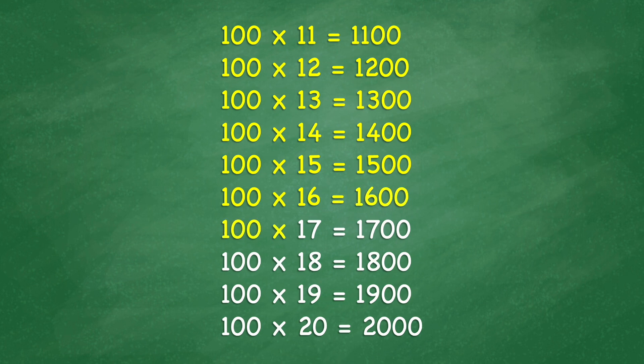100 times 17 equals 1,700. 100 times 18 equals 1,800. 100 times 19 equals 1,900. 100 times 20 equals 2,000.